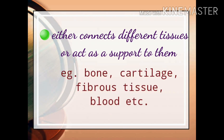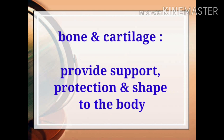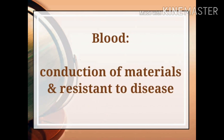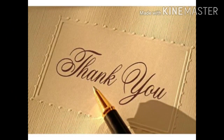Examples of connective tissue are bone, cartilage, fibrous tissue, and blood. Bone and cartilage provide support, protection, and a definite shape to the body. Fibrous tissue connects other tissues. Blood is a connective tissue whose function is to carry out the conduction of materials and make the body resistant to disease. We will continue in the next class.